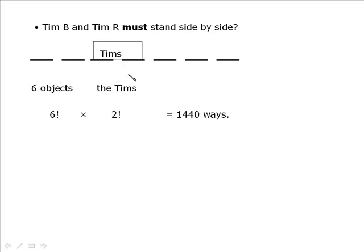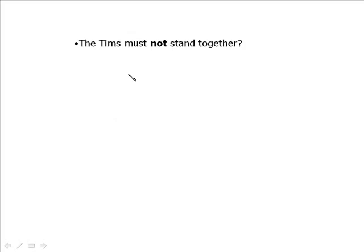Now the next bullet inverses all this because it's where the Tims must not stand together. Now most people approach these questions quite innocently. And they think, well, that's easy. They just work out all the ways they can not be together. But it actually is quite challenging. Because if you consider it, I'll just write this up to the side. If you took seven objects, the seven people, and you know, you put Tim B there and you put Tim R there. Well, think of all the different ways you could set them up where they're not together. So it isn't practical to solve it directly.